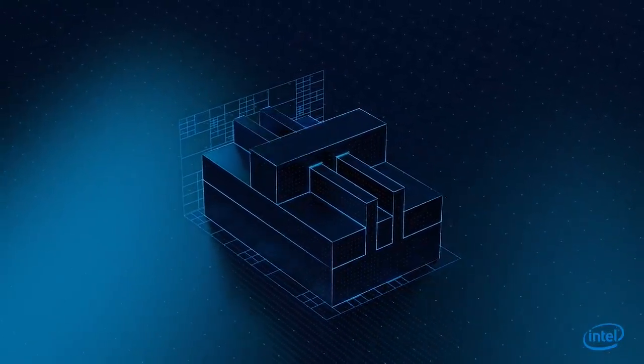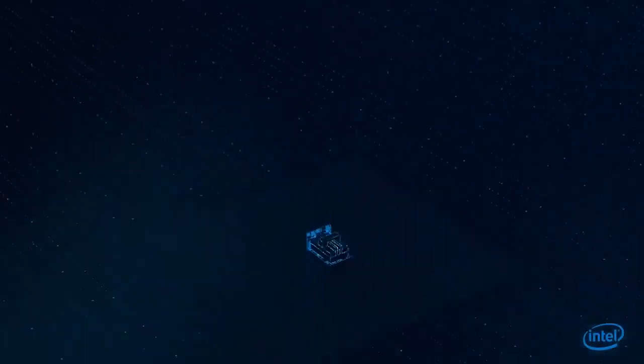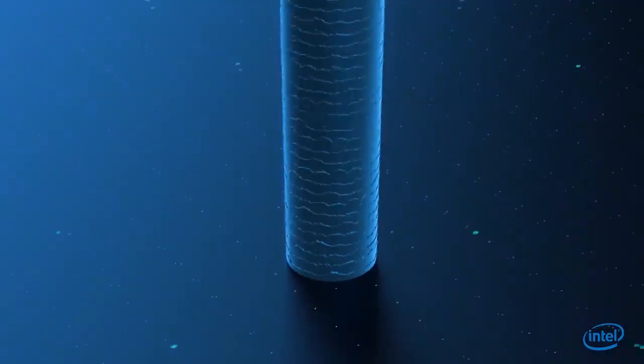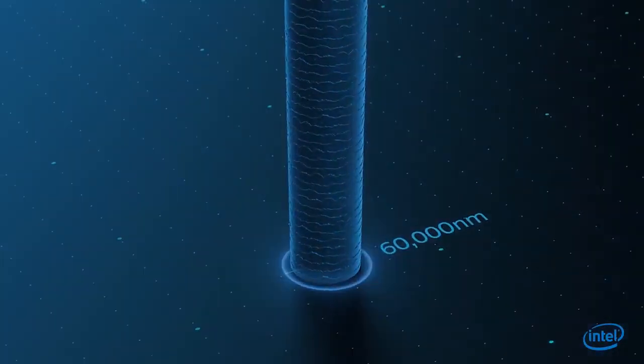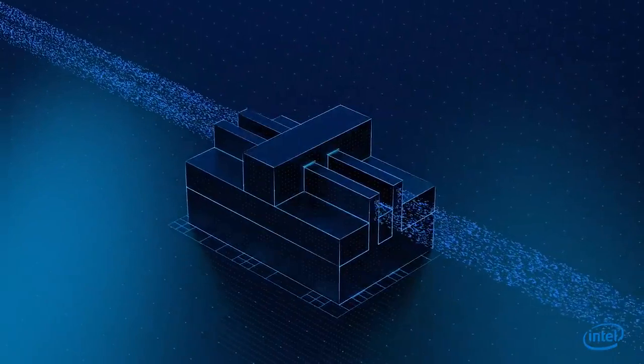At the heart of all modern electronics, the transistor is a tiny switch, 10,000 times smaller than a human hair that controls the flow of electrons through a circuit.